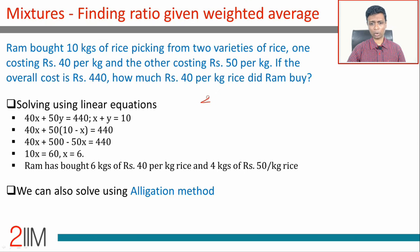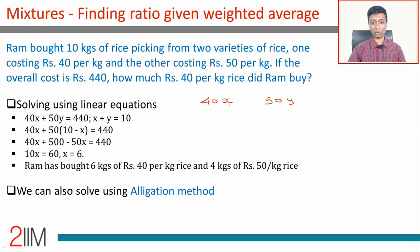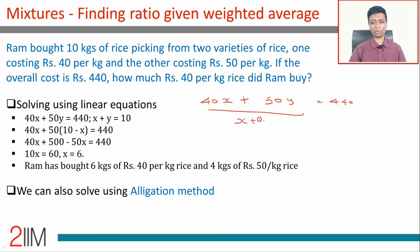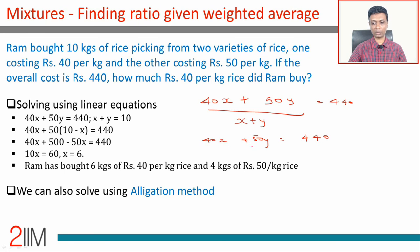I'll solve this algebraically. You're buying rice at rupees 40 per kilogram and rice at rupees 50 per kilogram. Let's say you buy x kilograms at ₹40 and y kilograms at ₹50. Total cost is 40x + 50y, and this equals 440. Average cost is (40x + 50y) / (x + y) = 44. So we have two equations: 40x + 50y = 440, and x + y = 10. Solve these two and you're through.